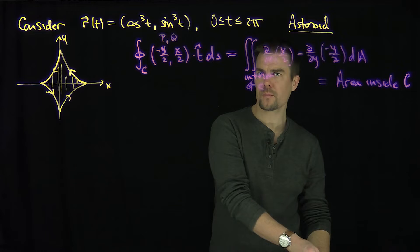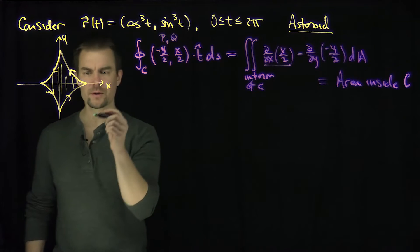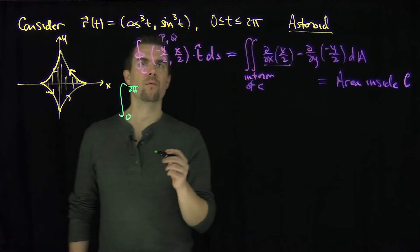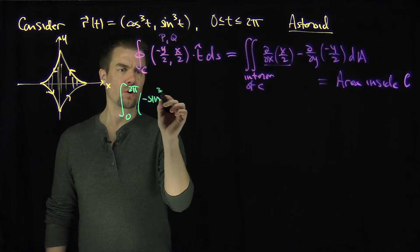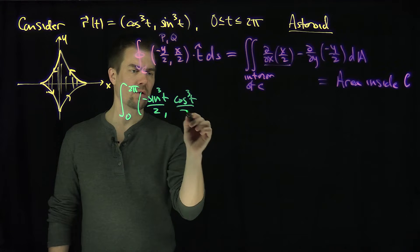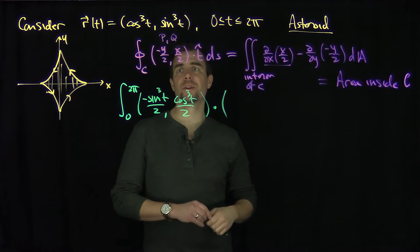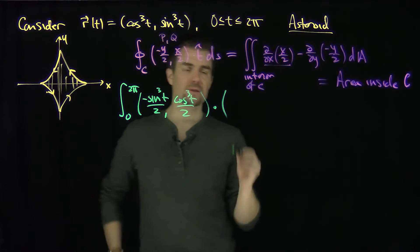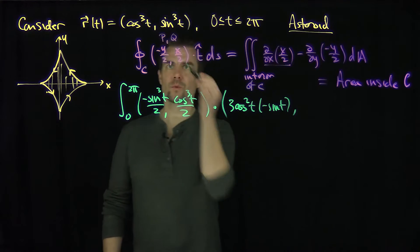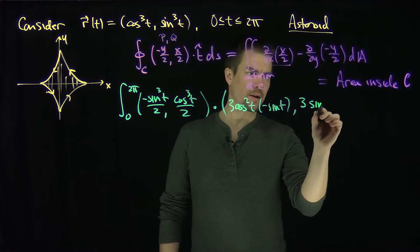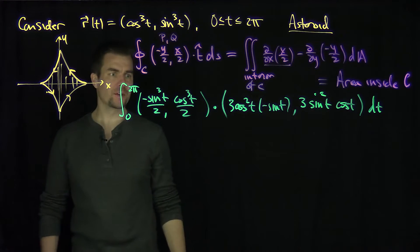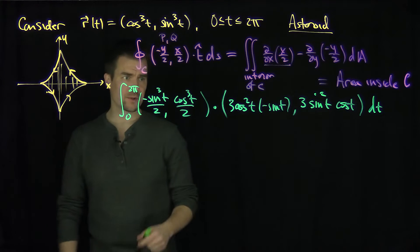So for our problem, we're going to plug these in. We integrate from 0 to 2π: the vector negative sine cubed of t over 2, cosine cubed t over 2, dotted with the derivative. The x-derivative is 3 cosine squared of t times negative sine of t, and the y-derivative is 3 sine squared of t cosine of t, dt. Evaluating this integral will give us the area inside the asteroid.